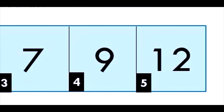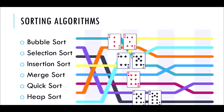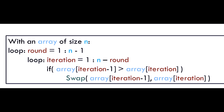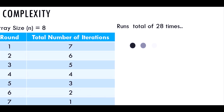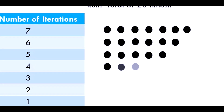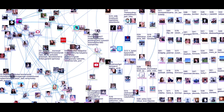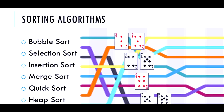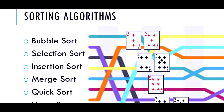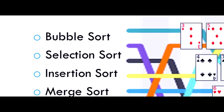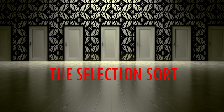Previously, we introduced sorting and listed various different sorting algorithms. We delved deeper into bubble sort and realized why it is an impractical algorithm to use in the real world. Today, in this video, we will introduce an algorithm that is slightly more efficient than bubble sort — the selection sort.